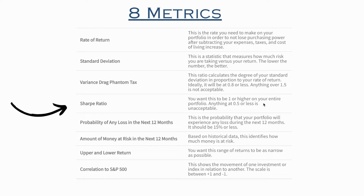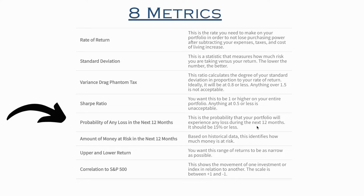Sharpe ratio — you want this to be one or higher. William Sharpe won a Nobel Prize in 1990, and anything under 0.5 is not acceptable. You also want to know the probability of any losses in the next 12 months. Everybody should know that. You're going to find out that a typical retail investment portfolio has a probability of loss normally greater than 25%. You want that to be 15% or less.